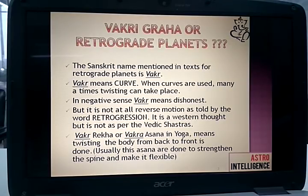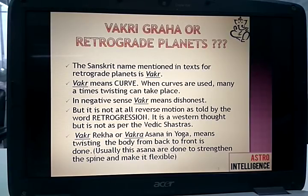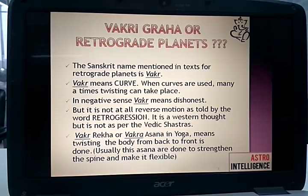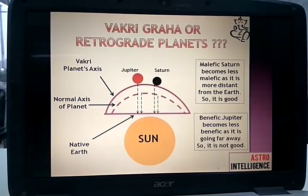Next point: Vakra Rekha or Vakra Asana. There can be two types of lines — Saral Rekha, which is a simple straight line, and Vakra Rekha, which is a curvy line. So Vakra means a curve. If we want to understand Vakra Asana in detail, that is done in yoga — it means twisting the body from back to front. This asana is usually done to strengthen the spine and make the body flexible.